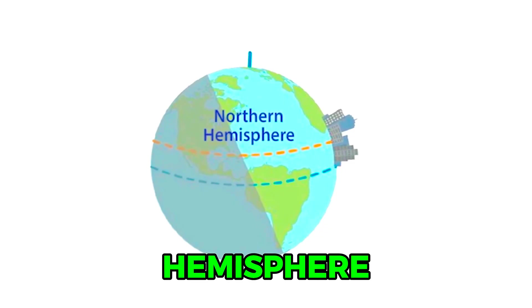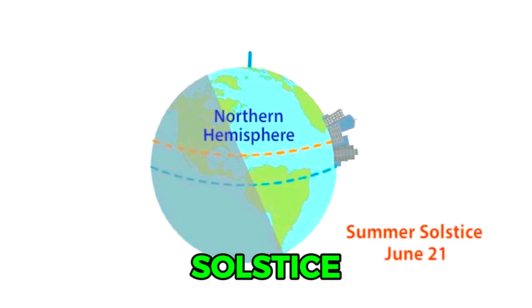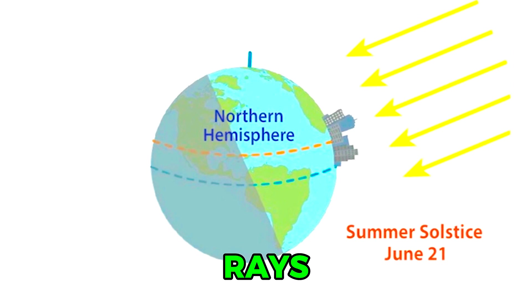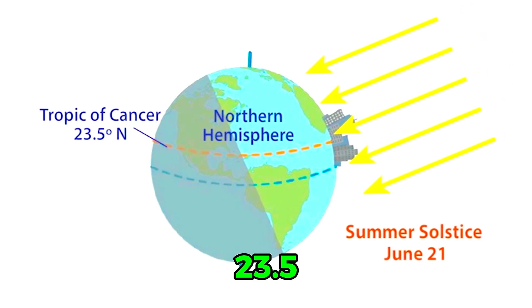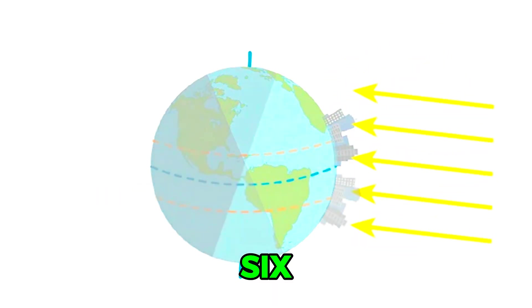In the northern hemisphere, the summer solstice occurs on June 21st, when the Sun's rays are directly hitting the Tropic of Cancer, 23.5 degrees north of the equator.